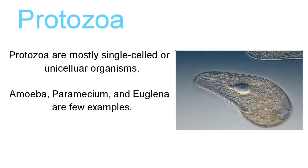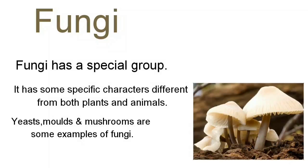Mostly, these are single-celled or unicellular organisms. Euglena shows the features of both plants and animals — it is neither in the plant category nor in the animal category, but in both, since it shows features of both.